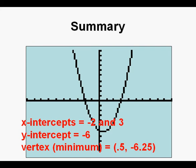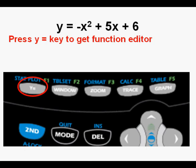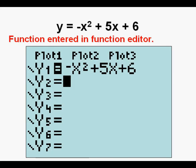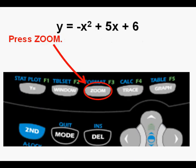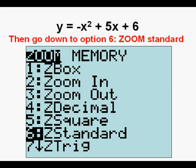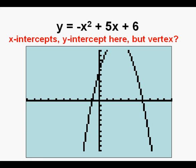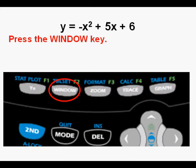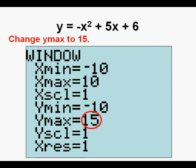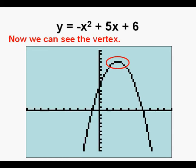Now we'll evaluate the function y equals negative x squared plus 5x plus 6. Press the y equals key to access the function editor and enter the function. To guarantee a standard window, press zoom, scroll down to option six, zoom standard, and press enter. Here we see two x-intercepts and a y-intercept, but the vertex is above and outside our view screen. Press the window key and adjust y max to equal 15, changing it from its normal value of 10. Now we can see the vertex toward the top as well.